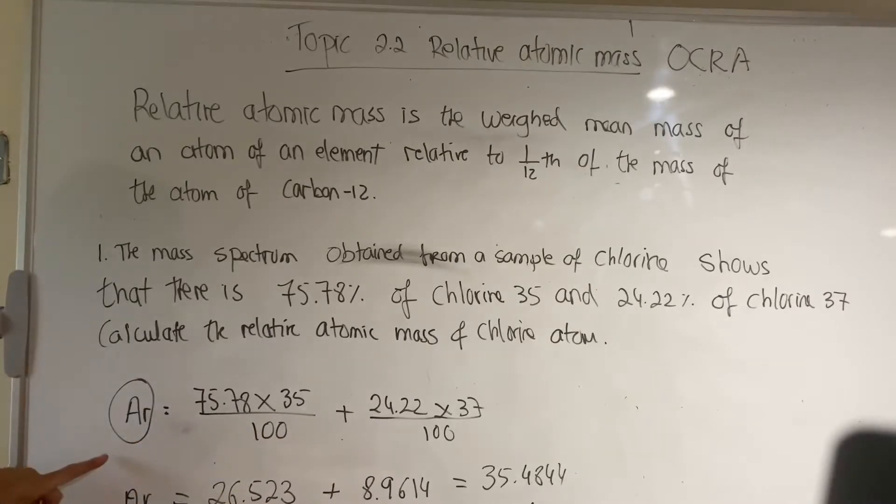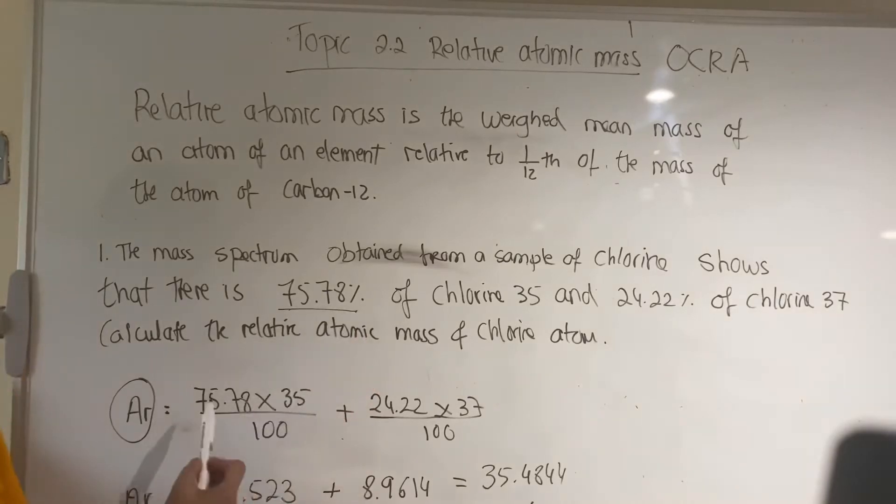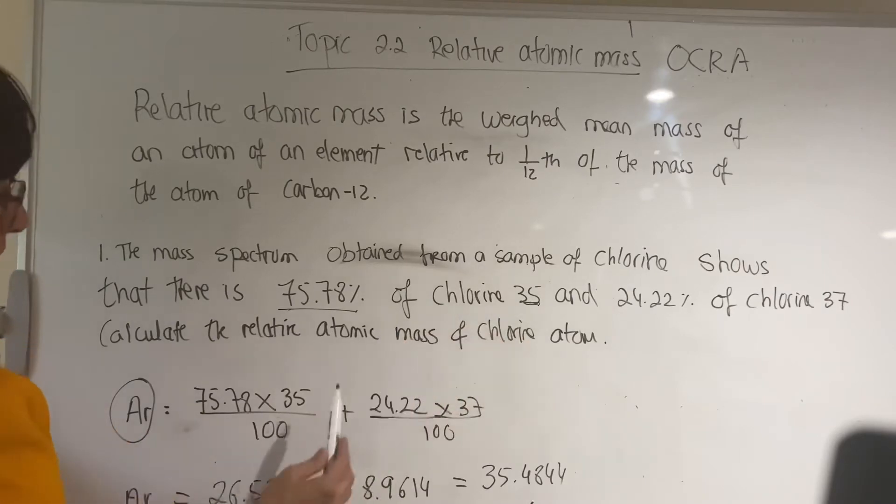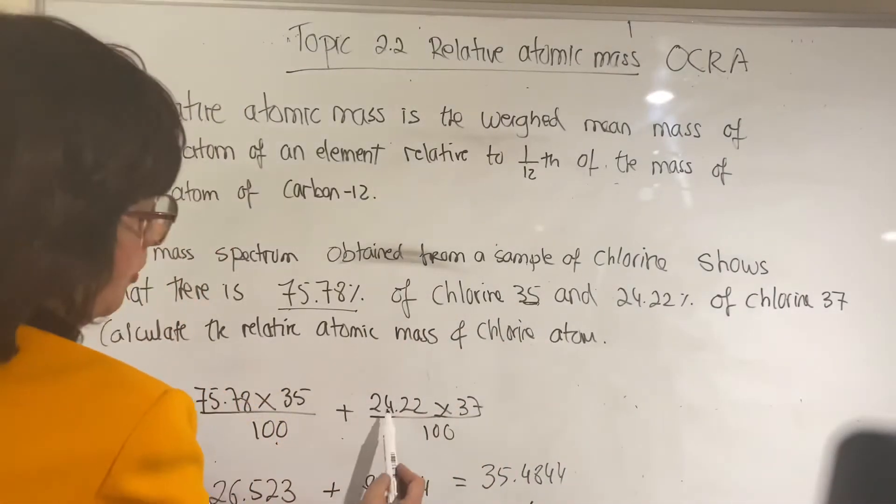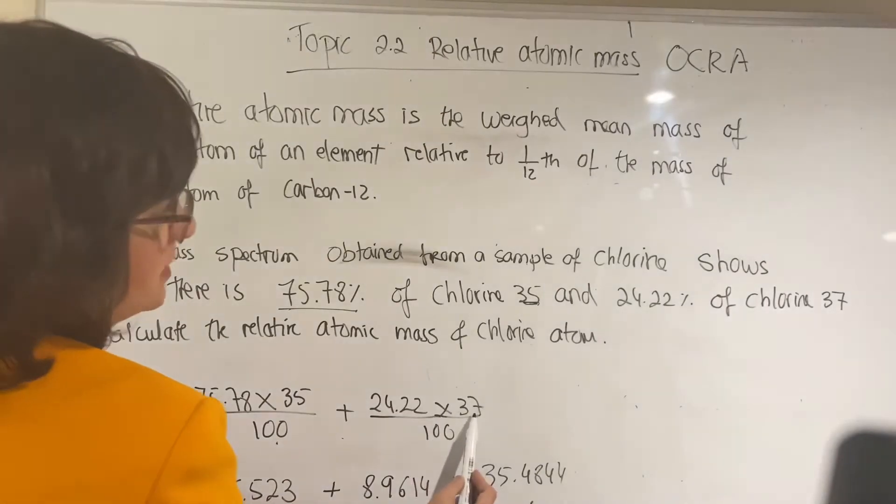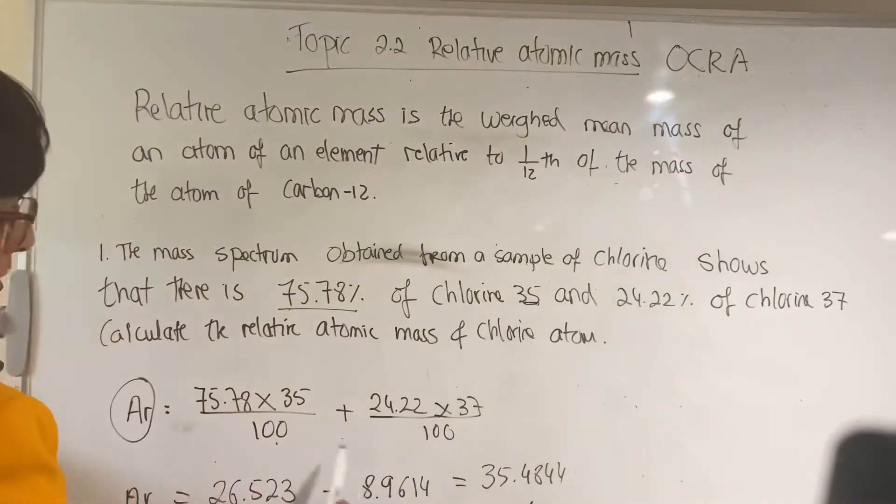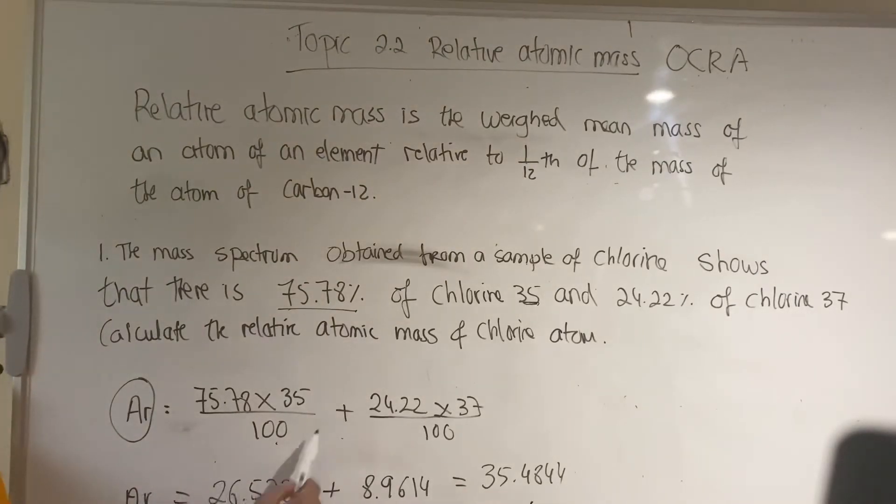The first thing you do, this is the symbol for relative atomic mass. So you work out the abundance which is 75.78 times 35, which is isotope 35, divided by 100, and then you add 24.22 times isotope 37 divided by 100. You can divide all by 100 if you like.